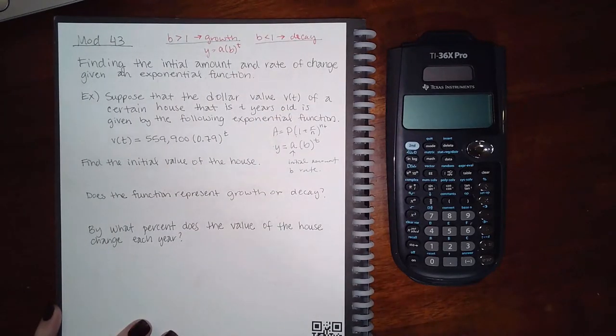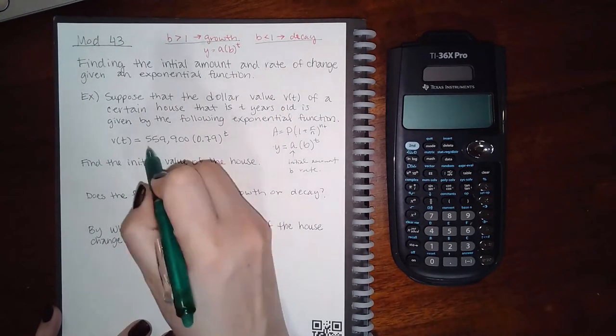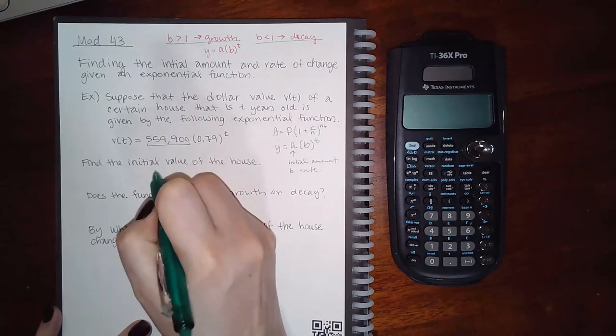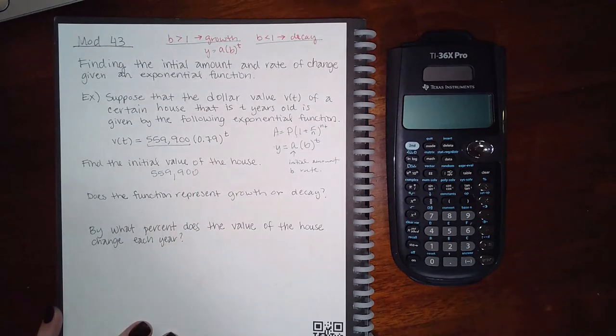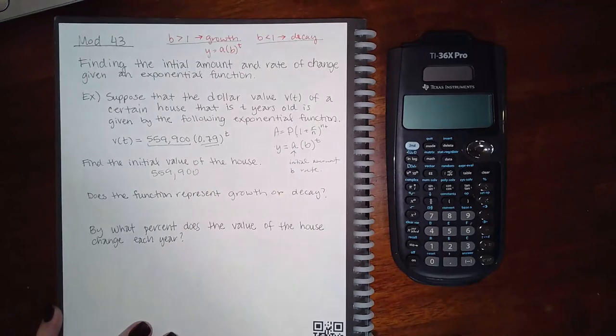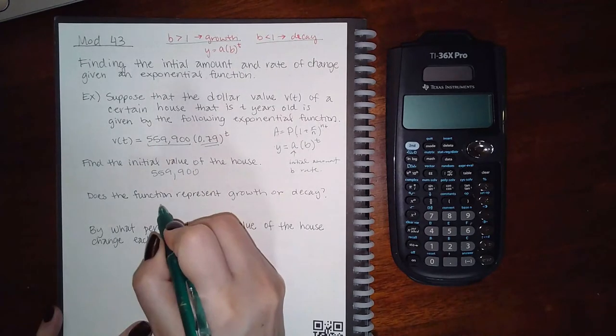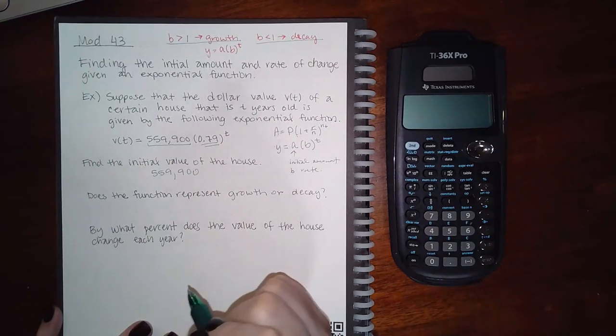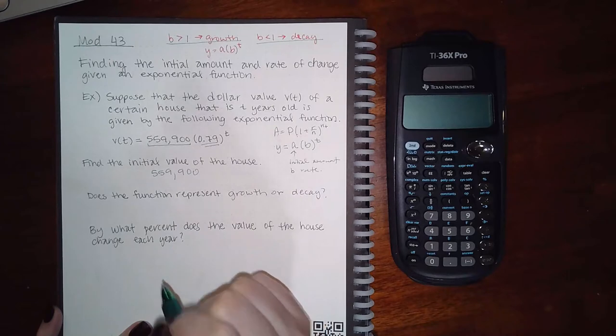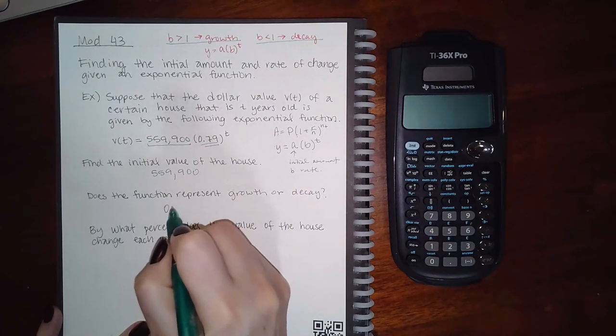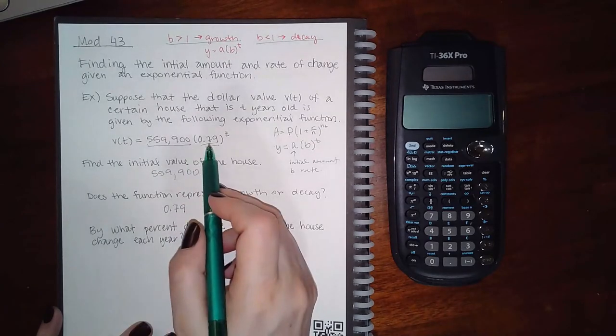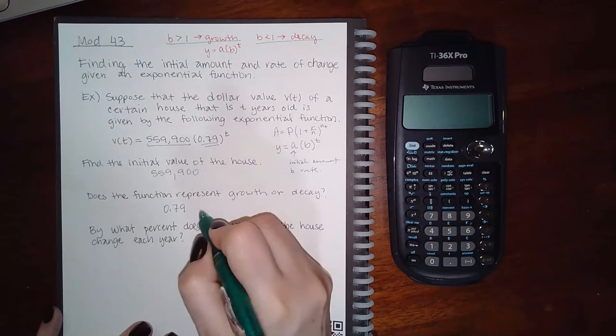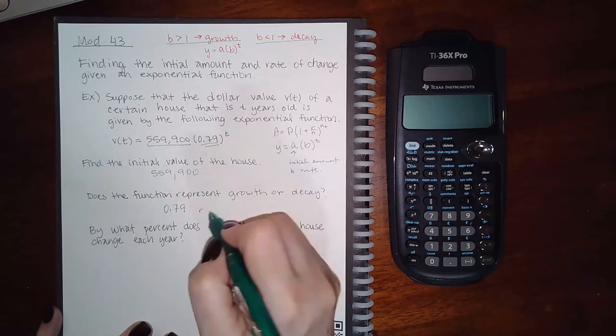Okay, so looking at this, my initial value is going to be this number here, which is 559,900. And then my growth or decay is going to come from this number inside the parentheses, so it is 0.79. And because it's less than one, it's going to be a decay.